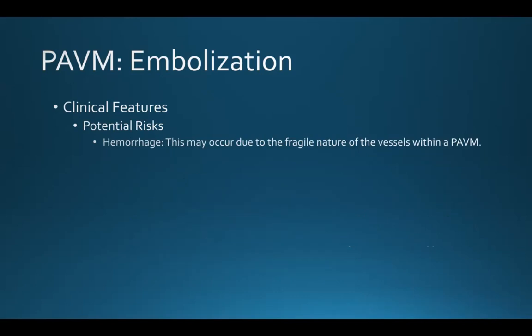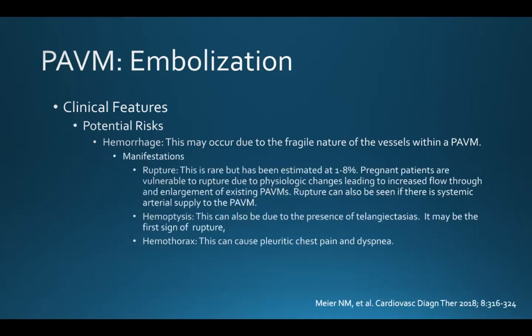The last potential risk is hemorrhage, which can occur due to the fragile nature of the vessels within the PAVM. Rupture is rare but has been estimated at 1 to 8%. Pregnant patients are particularly vulnerable to rupture due to physiologic changes leading to increased flow through and enlargement of existing pulmonary AVMs. Rupture can also be seen if there is systemic arterial supply to the PAVM. Hemoptysis and hemothorax can also occur, causing pleuritic chest pain and shortness of breath.